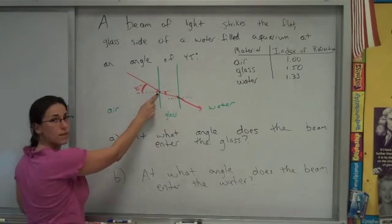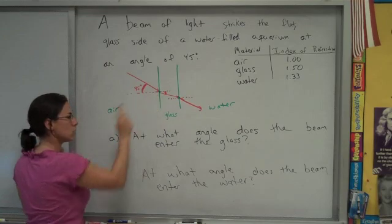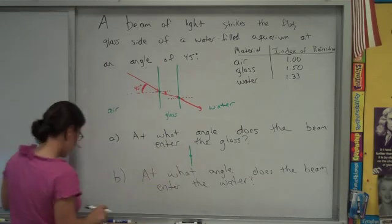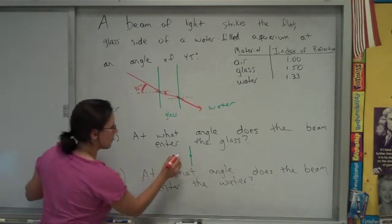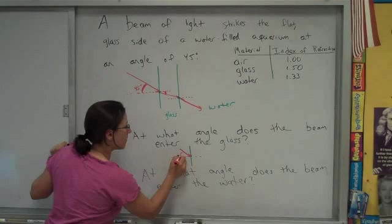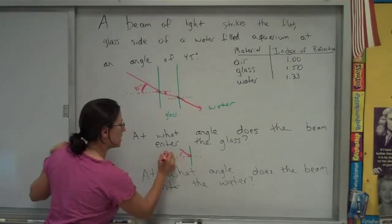So for A, we're just working at this boundary. So I'm just going to draw that boundary here. And show for air to glass what we know. And we know that the first or incident angle is 45 degrees.